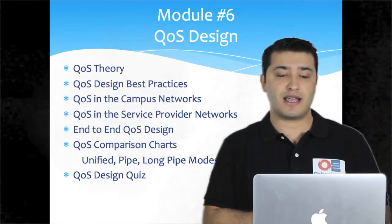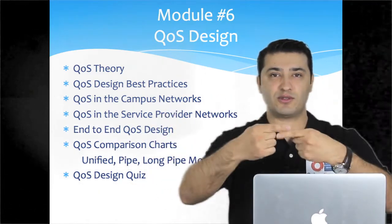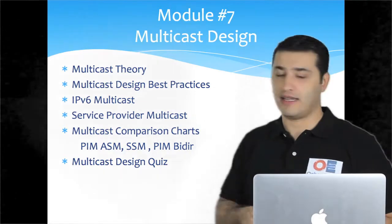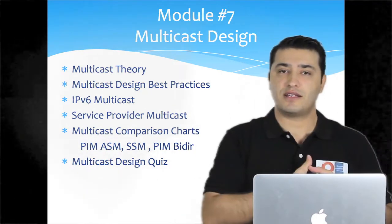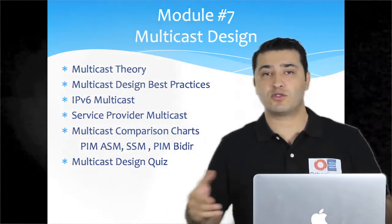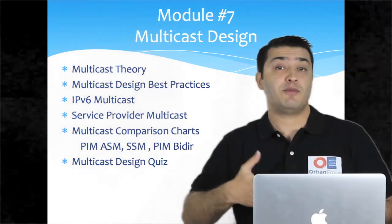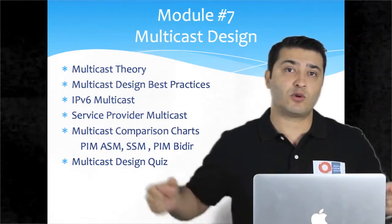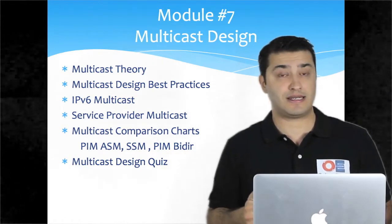I will continue with quality of service design — QoS on the internet, QoS in campus, in service provider networks, and end-to-end quality of service. The next topic will be multicast design. In multicast design, we will start with IGMP and continue with PIM. All PIM sparse mode flavors will be explained, such as PIM any-source multicast, PIM source-specific multicast, and PIM bidir. We will compare all these technologies from a design point of view.